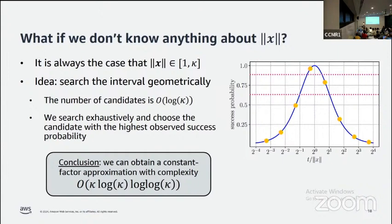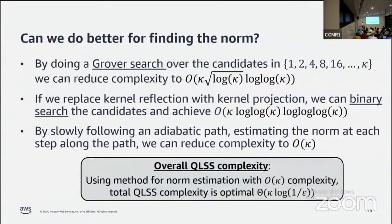We just try the algorithm on all these values and pick the one with the best observed success probability. Because there's log κ candidates and detecting whether a candidate is good takes O(κ) time, the overall complexity is κ log κ with an extra log log κ correction. So it's not quite linear in κ but pretty close. Can we do better than that? Yes, we can. Firstly, it's immediate to observe that if we replace our exhaustive search with a Grover search, we can reduce that log κ to square root of log κ almost for free.